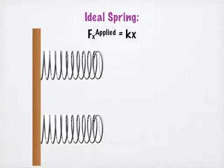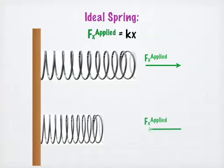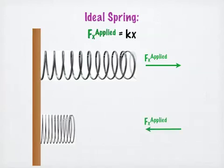In this equation, F sub x applied is the force applied to either stretch the spring or to compress the spring. We give the force the subscript x in this case to remind us that the stretching and compressing are happening linearly in one direction.